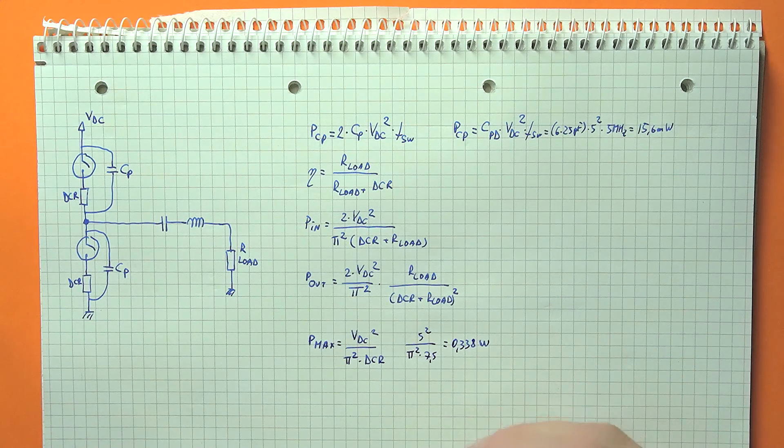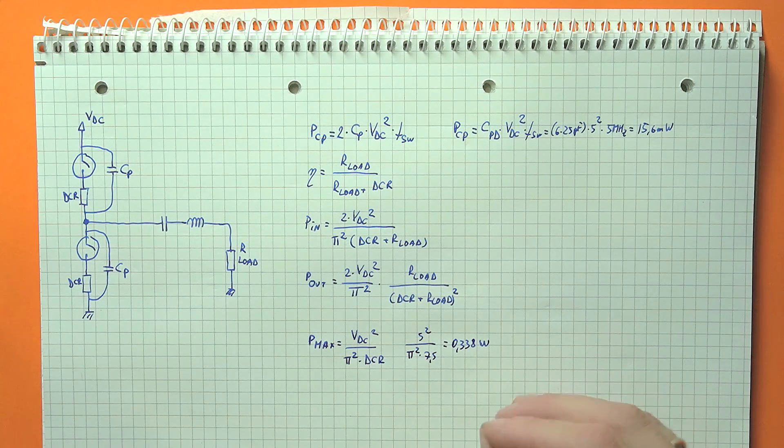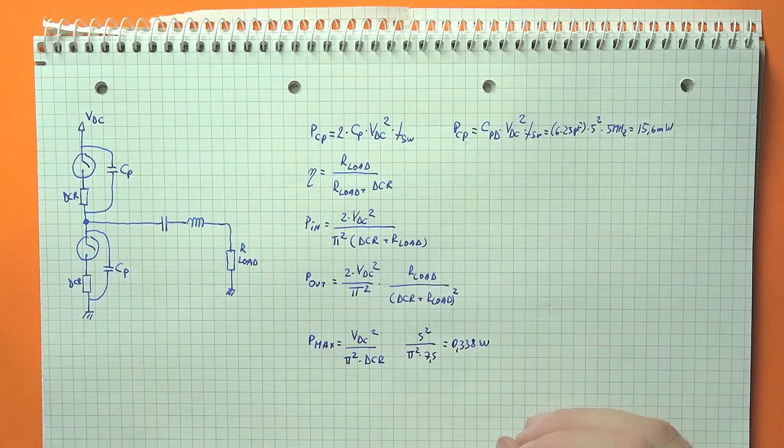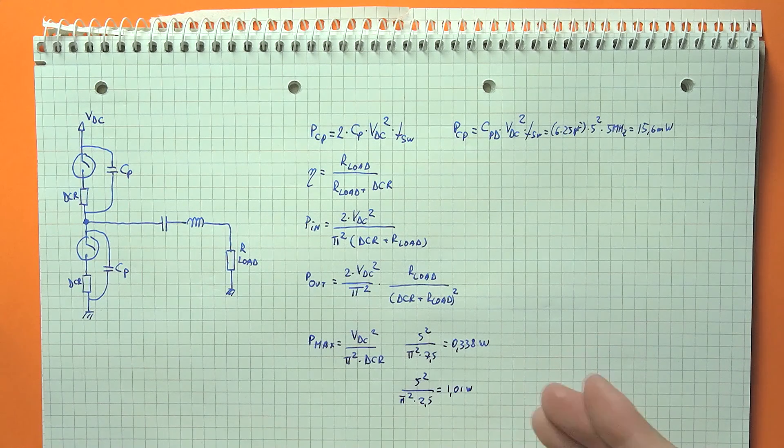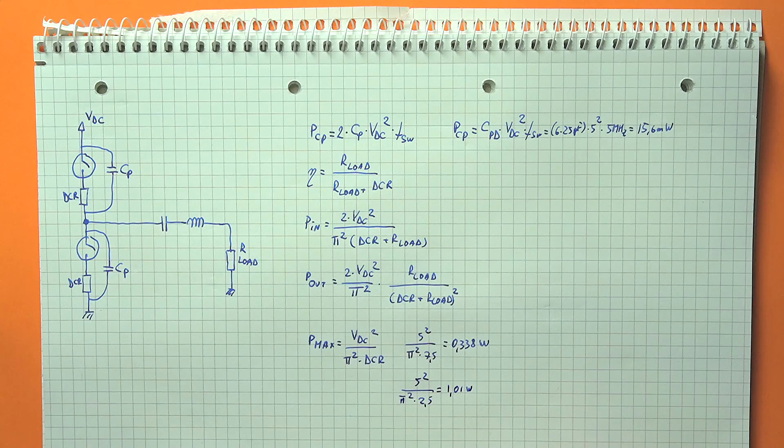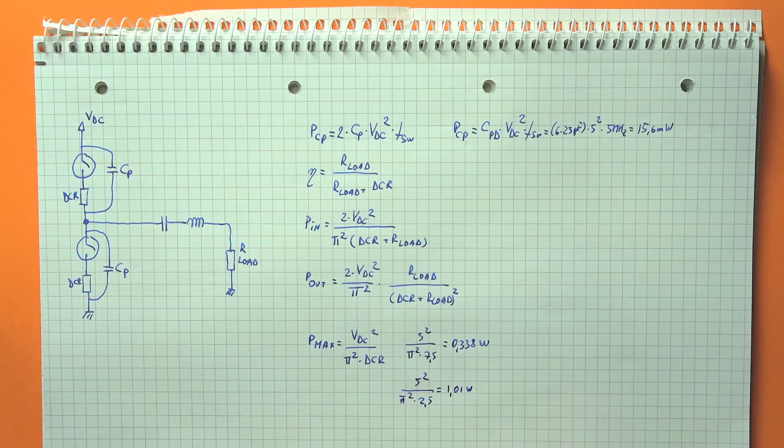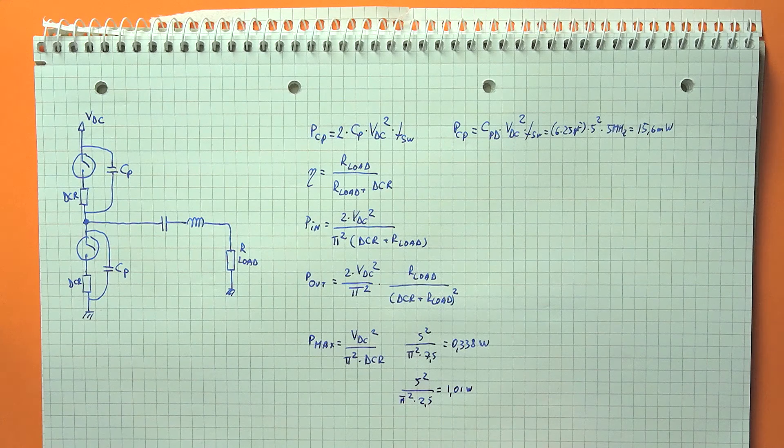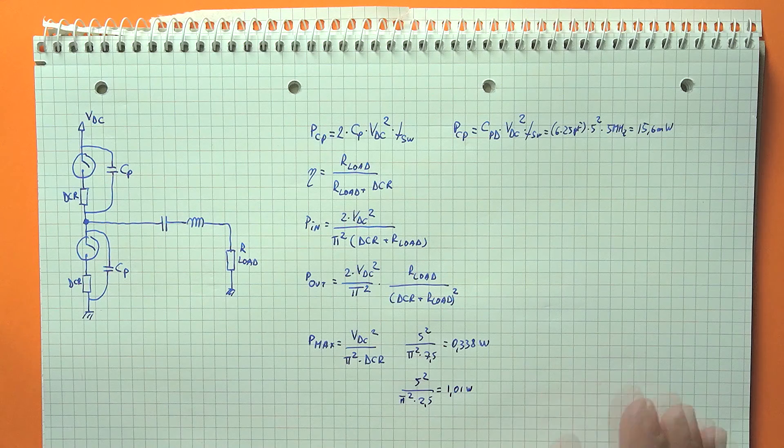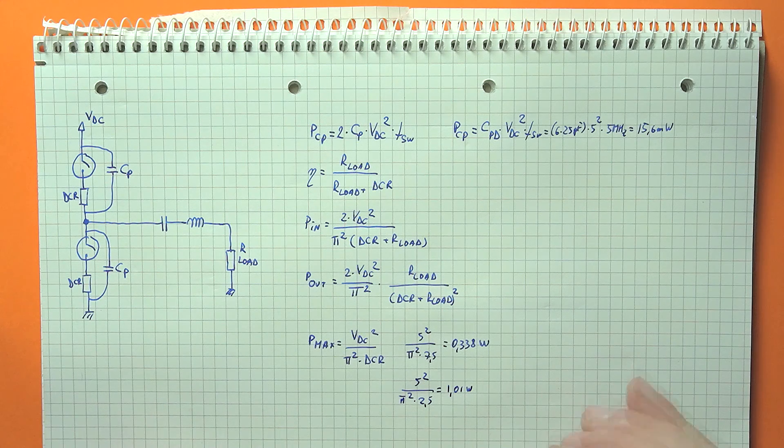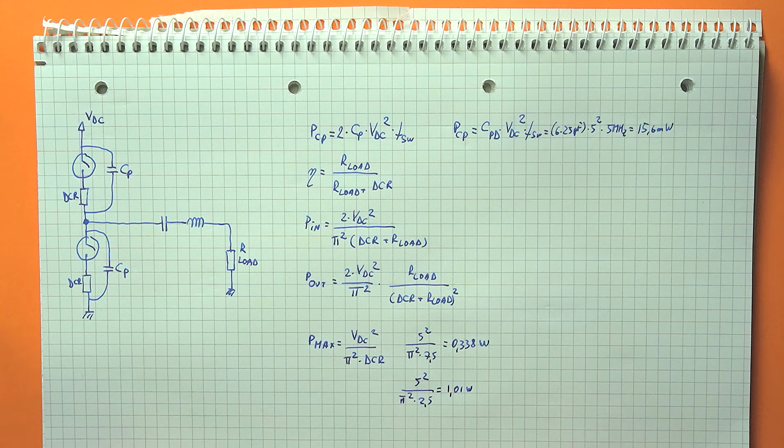If we take the 7.5 ohm worst case value, the maximum output power we can achieve is only 3.4 watts. So our amplifier will not work in extreme conditions. If we take the 2.5 ohm value, we should be able to output about 1 watt. But even this is quite a large series resistance. So the exact value of series resistance in the power stage has a great impact on the amplifier final performance. Let's investigate the exact value a bit.